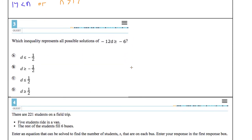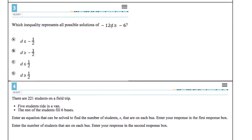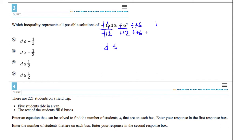Number 3: which inequality represents all possible solutions? I need to divide both sides by negative 12. When I divide or multiply by a negative, the inequality sign flips — so instead of greater than or equal to, it becomes less than or equal to. The 12s and negatives cancel out, leaving d on the left. On the right I have negative 6/12, and dividing top and bottom by negative 6 gives positive 1/2. So d is less than or equal to 1/2. Correct answer is C.